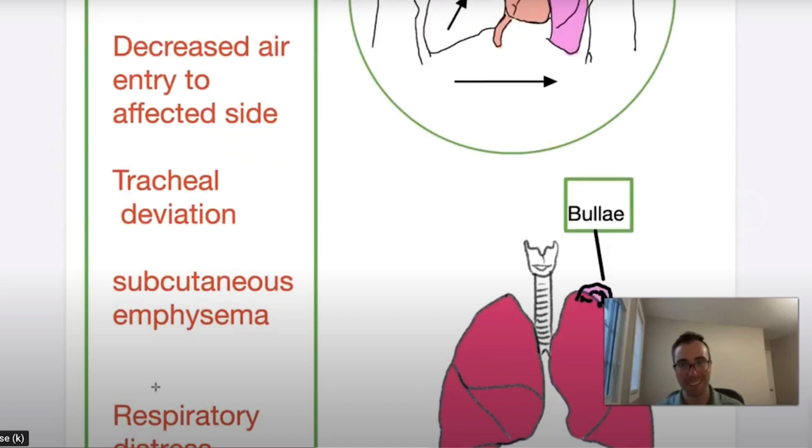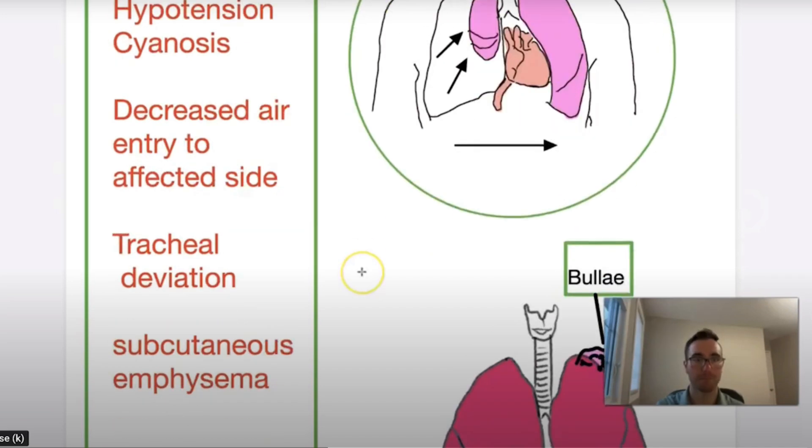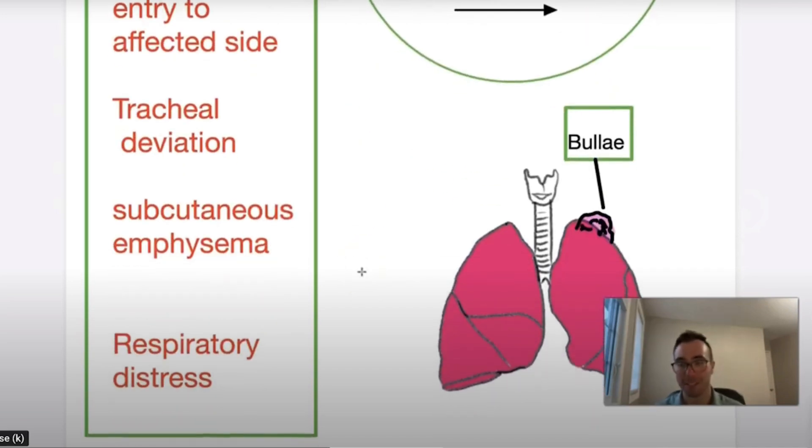So tracheal deviation, this is kind of more of a textbook sign or a late sign. It's very rare to probably see that in the pre-hospital setting, maybe chest x-rays. But again, it can happen, especially if pressure builds up enough. So it gets so accumulated in the chest, it pushes them onto the unaffected side.